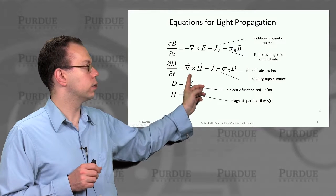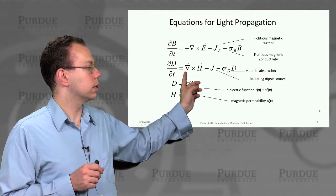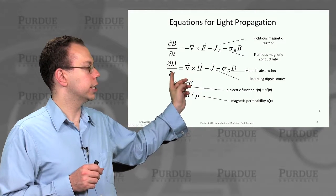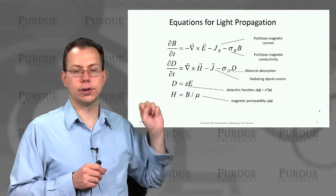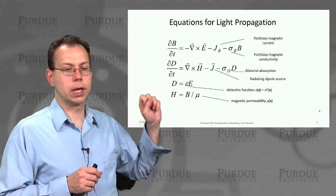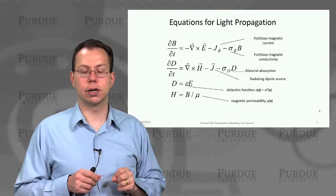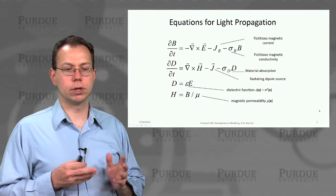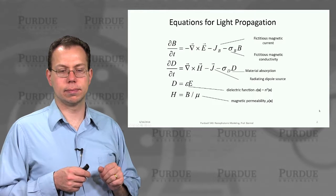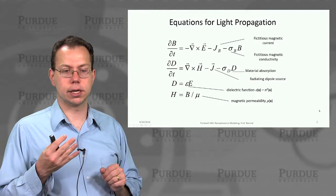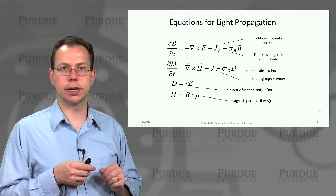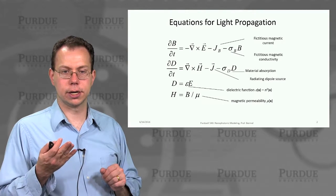this is Ampere's law, Ohm's law, of course, with Maxwell's correction, dD by dt, also known as the displacement current. And then there's this extra term here, which is the material absorption, which is commonly present if you have Ohm's law in the material, right? So for a conductor, like a metal.